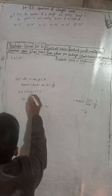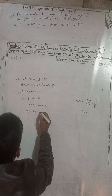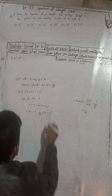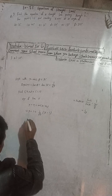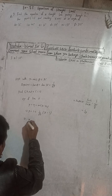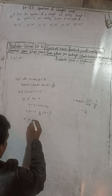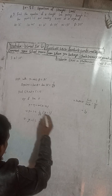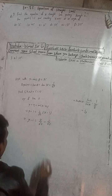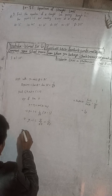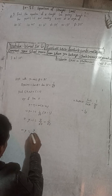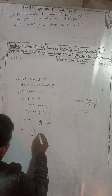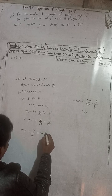This implies y minus 1 equals (1 by root 3) into (x minus 1). Expanding: y minus 1 equals x by root 3 minus 1 by root 3. So y equals x by root 3 minus 1 by root 3 plus 1.